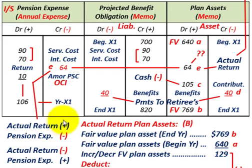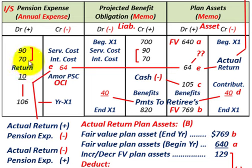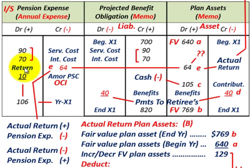The opposite would be true if our actual return was a negative amount — say the fund lost money and the ending balance was less than the beginning balance. Then we would have had a credit or reduction in our plan assets, and the debit amount would go to our pension expense, increasing it. If the actual return was a negative amount, then our pension expense would be increased rather than reduced.